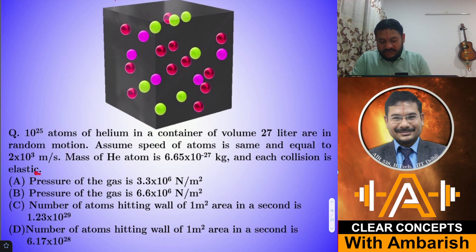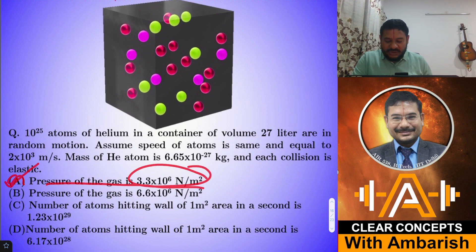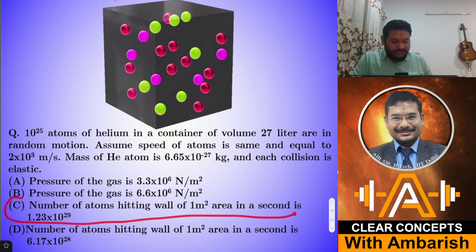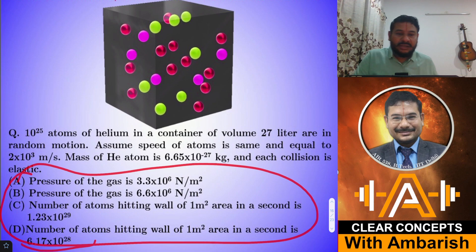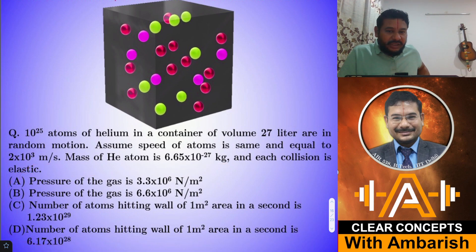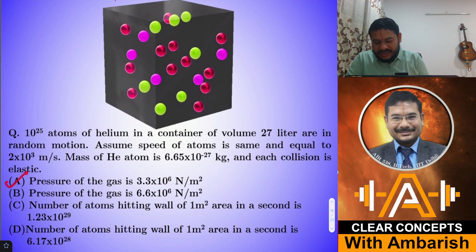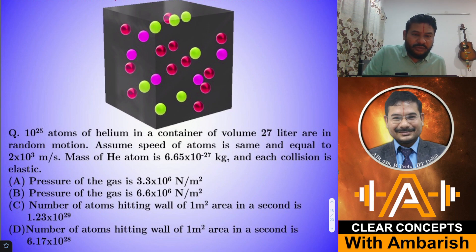We have to comment on four options. Option A: pressure of the gas is 3.3×10⁶. Options C and D concern the number of atoms hitting the wall of one square meter area per second. We have to evaluate pressure and the number of collisions per unit area. The given key was A and C, but that key is not correct — I'll let you know what the correct key is.